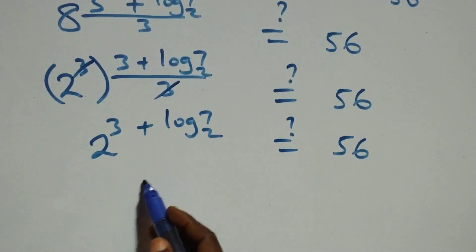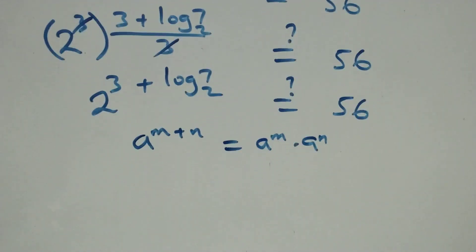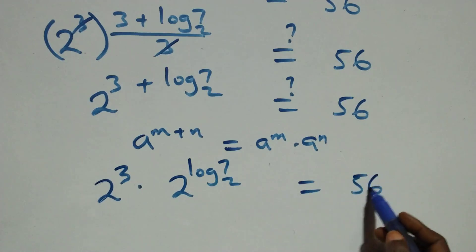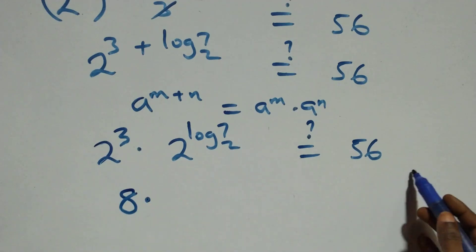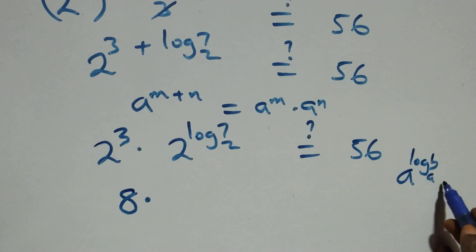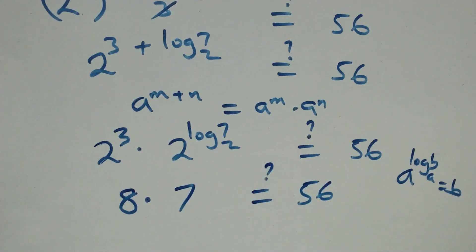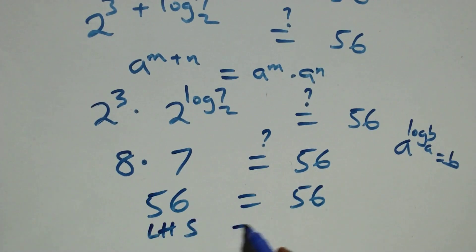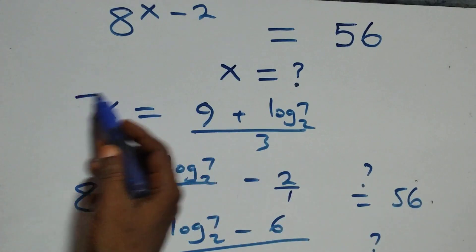We apply the law of indices: a raised to power n plus m equals a^n times a^m. So this becomes 2 raised to power 3, times 2 raised to power log₂7. Now 2 raised to power 3 equals 8, and by the identity a^(log_a b) = b, we have 2^(log₂7) equals 7. So 8 times 7 equals 56, which equals 56 on the right-hand side. Left-hand side equals right-hand side, and therefore we conclude that x equals (9 plus log₂7) over 3.